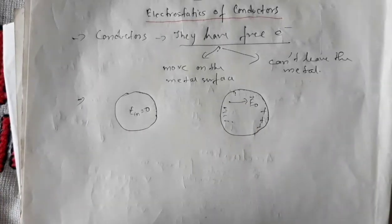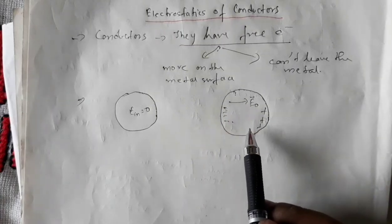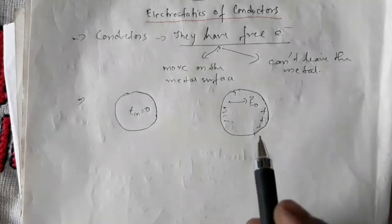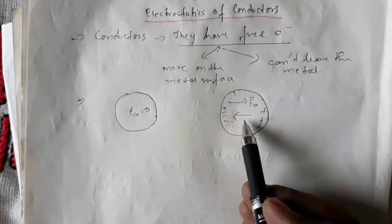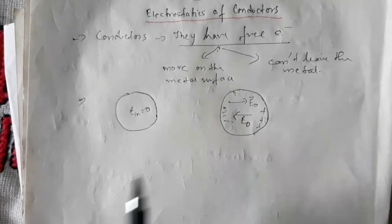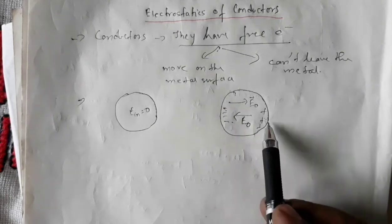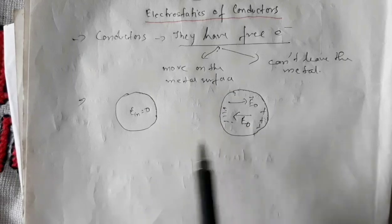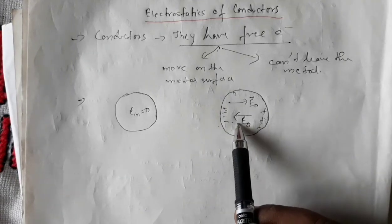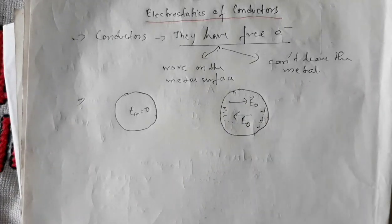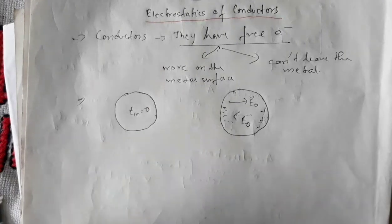When a conductor is subjected to an external electric field, the free charges inside rearrange themselves and produce an induced electric field in the opposite direction. This induced electric field is such that the resultant electric field inside the conductor is zero. So the basic idea is: for a conductor, the resultant field inside the conductor is always zero.